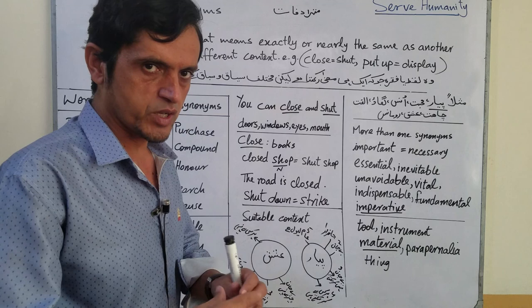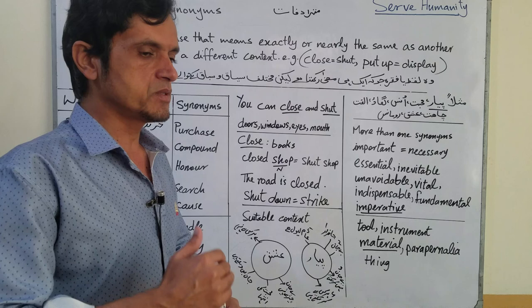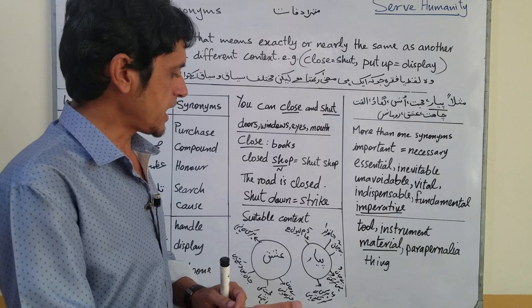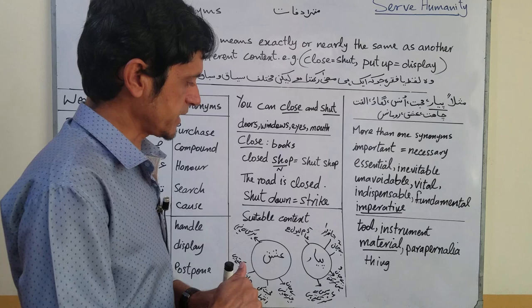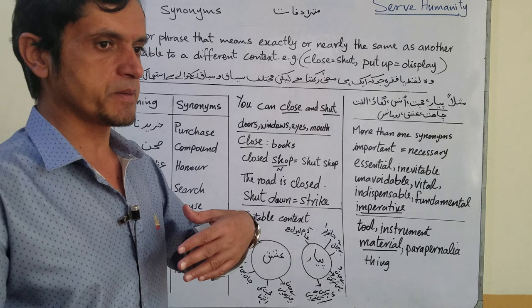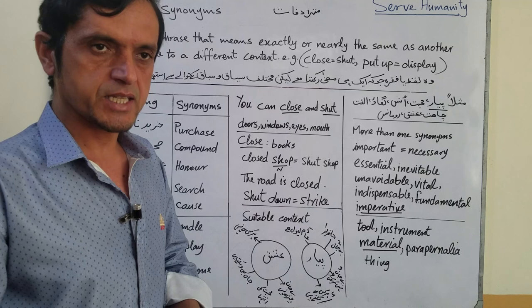Yeh kyun? Jab do alfaaz aik jaise mana rakhte hon lekin hum in ko mukhtalif context mein istemaal karte hain, is ke aik khaas wajah hoti hai. Mithlan piyaar mein yeh element hai ke yeh jaandar kar sakta hai, aur aap jaandar ke saath bhi kar sakte hain aur bejaan dono ke saath. Jaise aap ghar ke saath piyaar kar sakte hain, gaari ke saath, walidain ke saath, apne bachon ke saath.